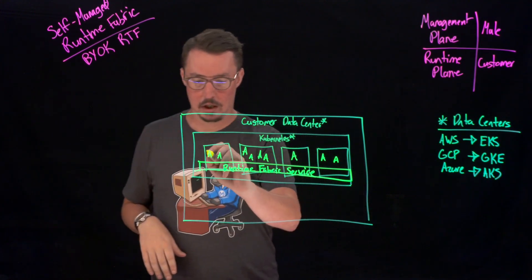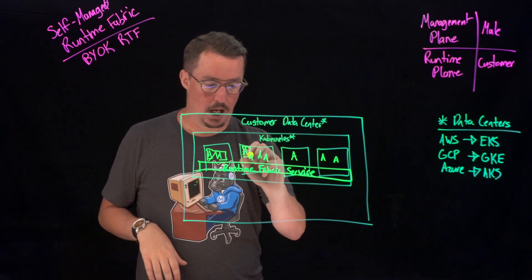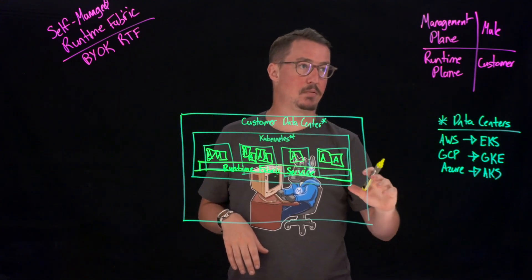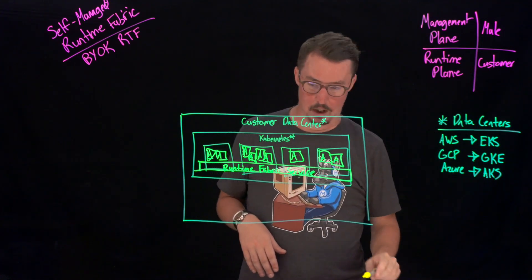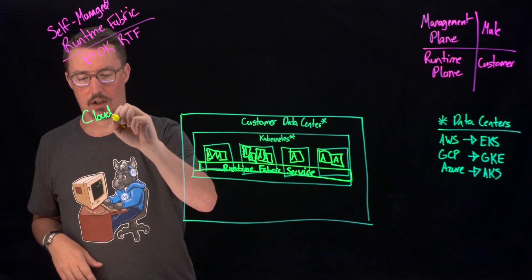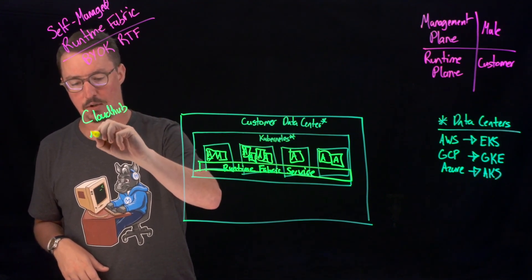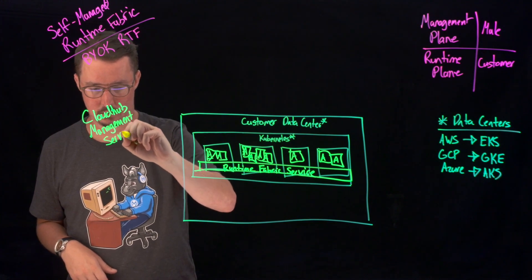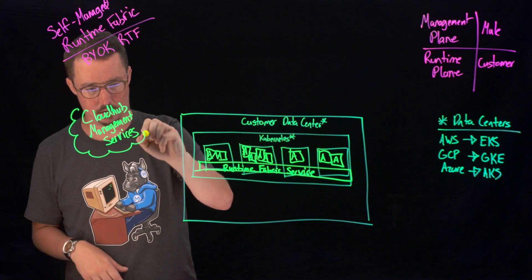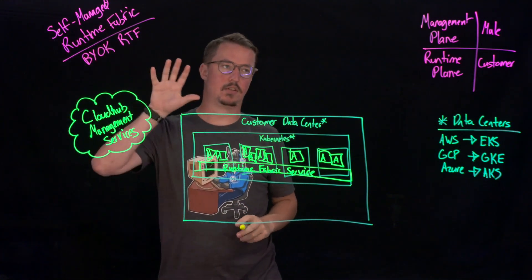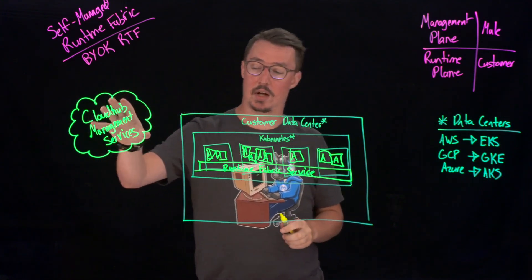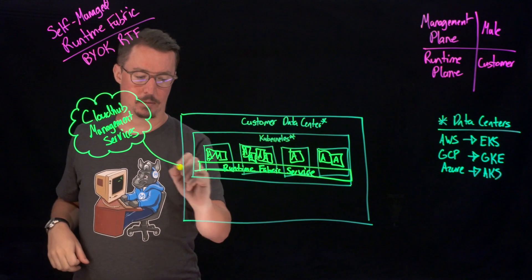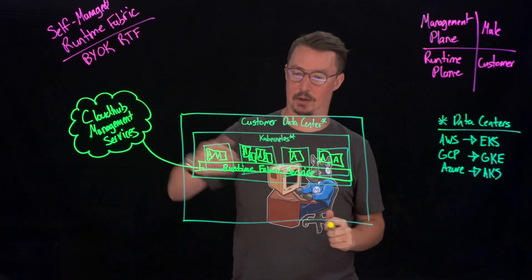With each one of these in their own container, the next thing to talk about is how we're actually going to manage these individual applications. The management plane is still up in MuleSoft's CloudHub. We're going to have our CloudHub management services — this is where we're still going to be able to manage these applications up in our runtime manager, API manager, monitoring services, and all these different things. All we need to do is connect up to our runtime fabric service to manage all the applications we have there.